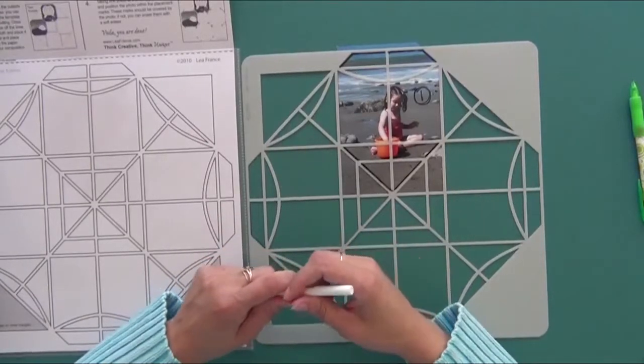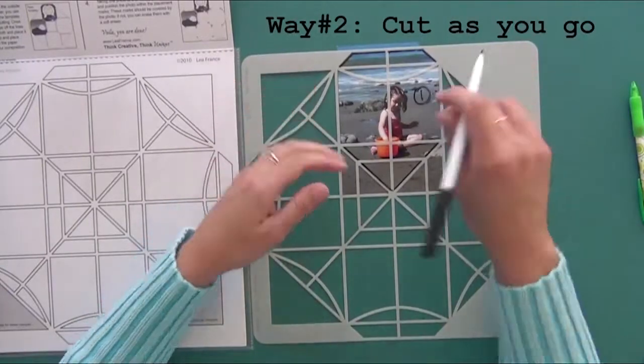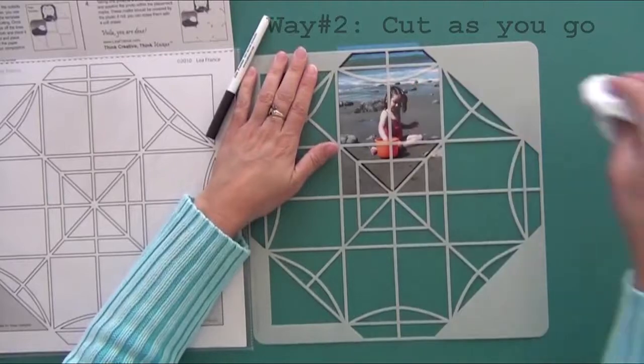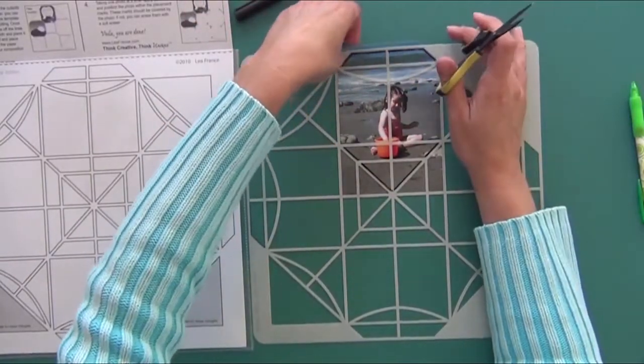The second way of building your layout is you trace on your photo again. You write number one, or actually you don't even have to write number one. You just trace onto your photo and cut your photo.